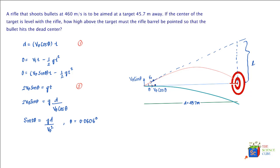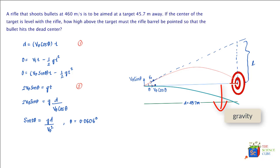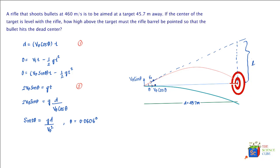So the angle of elevation should be 0.0606 degrees to allow the bullet to go up and come down under gravity and hit the bull's eye. If aimed straight, the bullet would curve down under gravity and miss the target. The question also asks for the distance l — how high above the target the rifle barrel must be pointed. Since we know theta, tan theta equals l divided by 45.7 meters. Solving for l gives l equals 4.84 centimeters, which is a very small elevation.